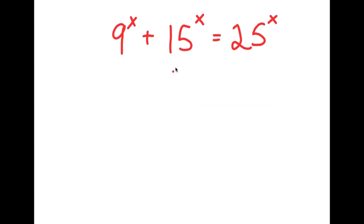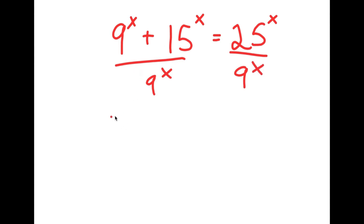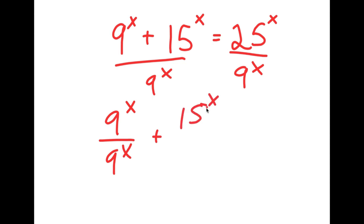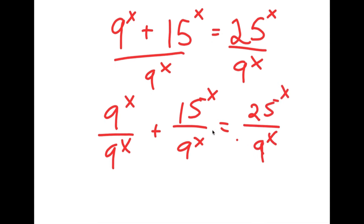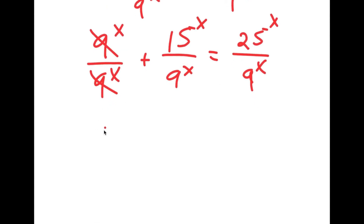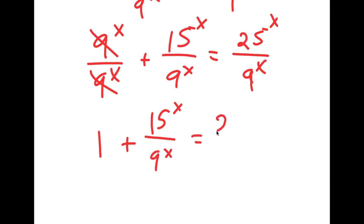So in this problem, I have 9 to the power of x plus 15 to the power of x is equal to 25 to the power of x. I'm going to first start by dividing both sides by 9 to the power of x. This results in 9^x over 9^x plus 15^x over 9^x is equal to 25^x over 9^x. The 9^x terms cancel, so I get 1 plus 15 to the power of x over 9 to the power of x is equal to 25 to the power of x over 9 to the power of x.